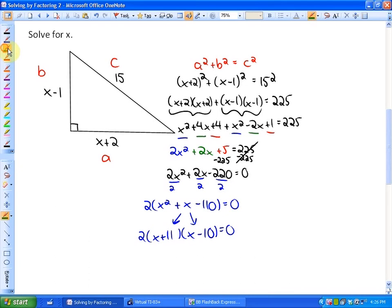So our two possible solutions here are x equals negative 11 and x equals positive 10, which in this case, again, reflect on if those answers make sense. Is it possible for x to be negative 11? Well, no, because then this length here would be negative 9, this would be negative 12, which makes no sense. So x cannot be negative 11, so x can only be 10.